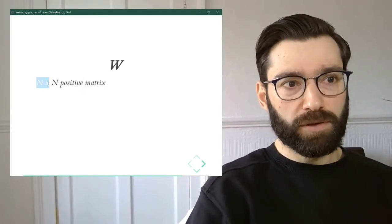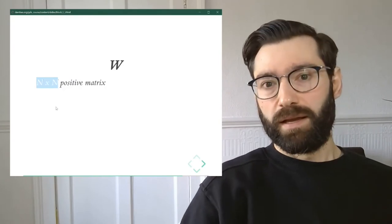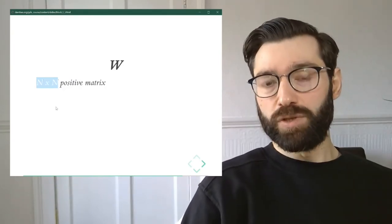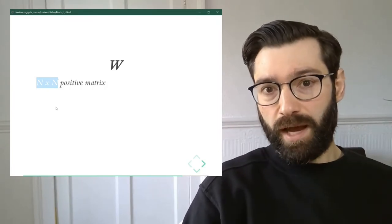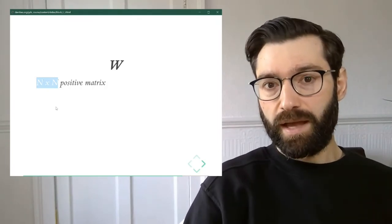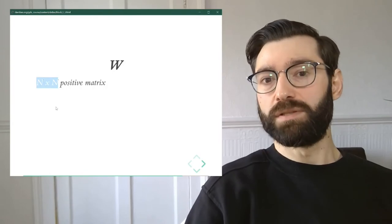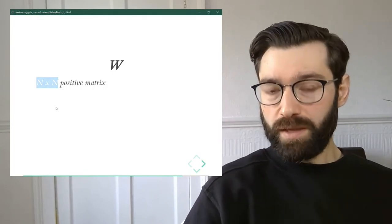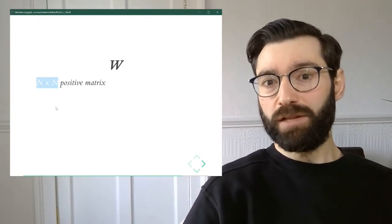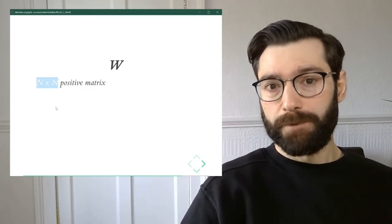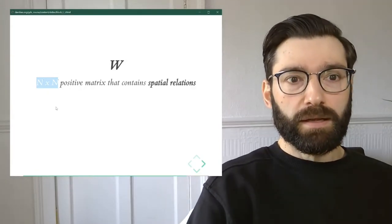And then the third element is that it's of dimension n by n, which is to say that it has as many rows as observations in our data set and as many columns as observations in our data set, which already may suggest to you that these matrices are potentially very, very large.